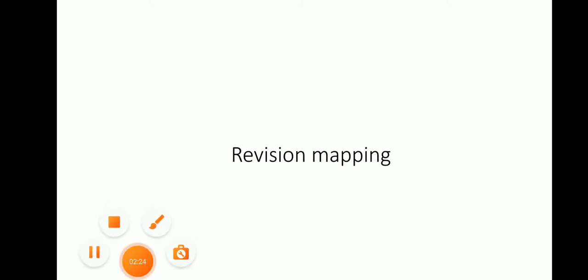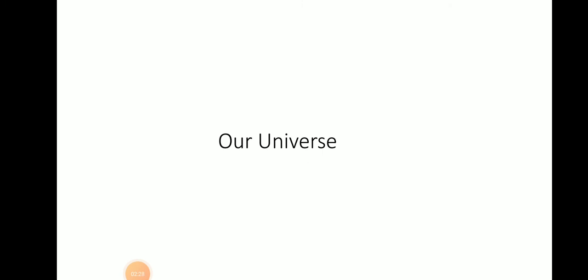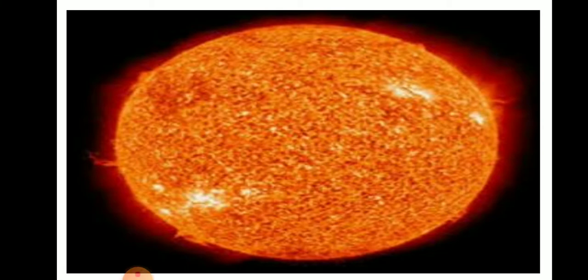Let us now discuss about the division mapping of our universe. The solar system mainly consists of the sun, planets, satellites, and other heavenly bodies.